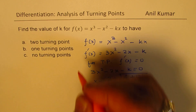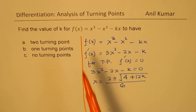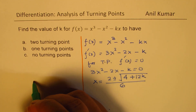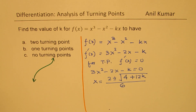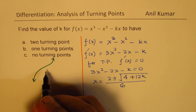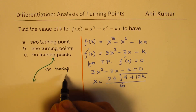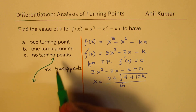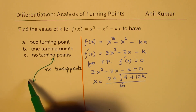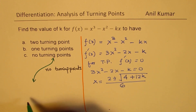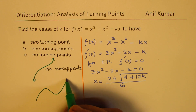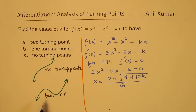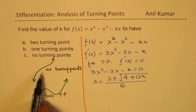The important thing to understand is that for any cubic function, we could have two conditions: a curve with no turning points, since with a positive leading coefficient we go from quadrant 3 to quadrant 1, or it is possible to have two turning points. These are the only two conditions possible.